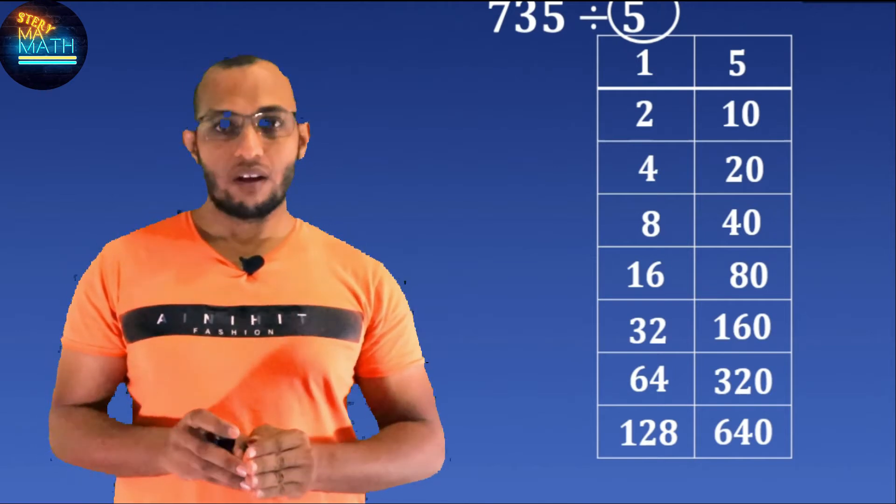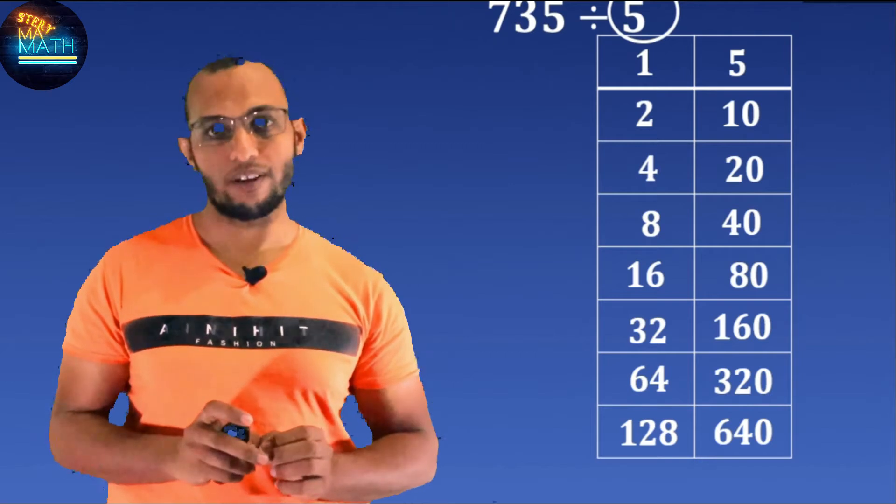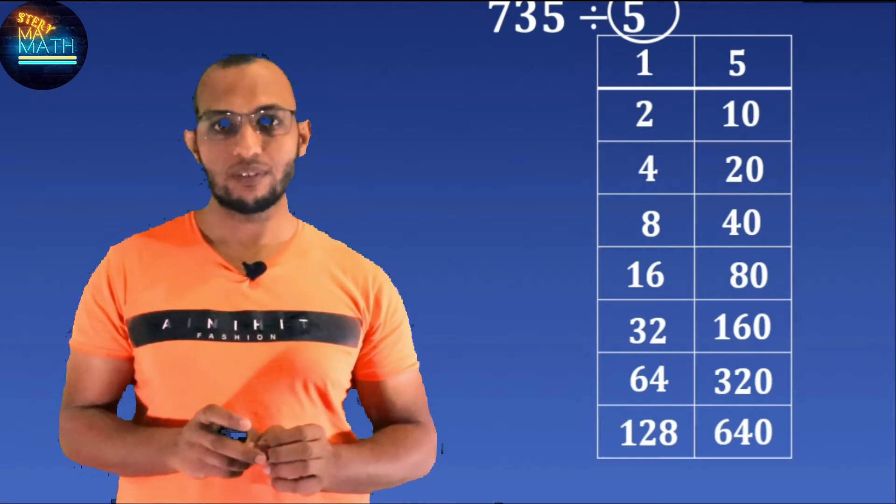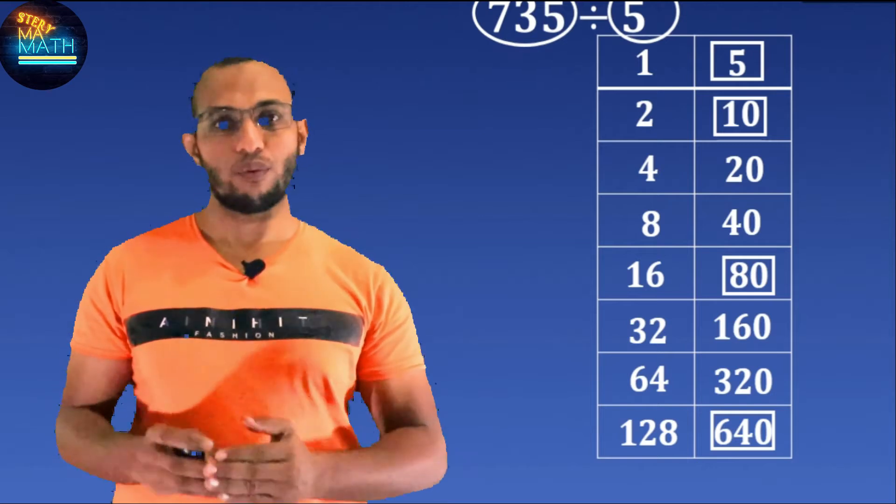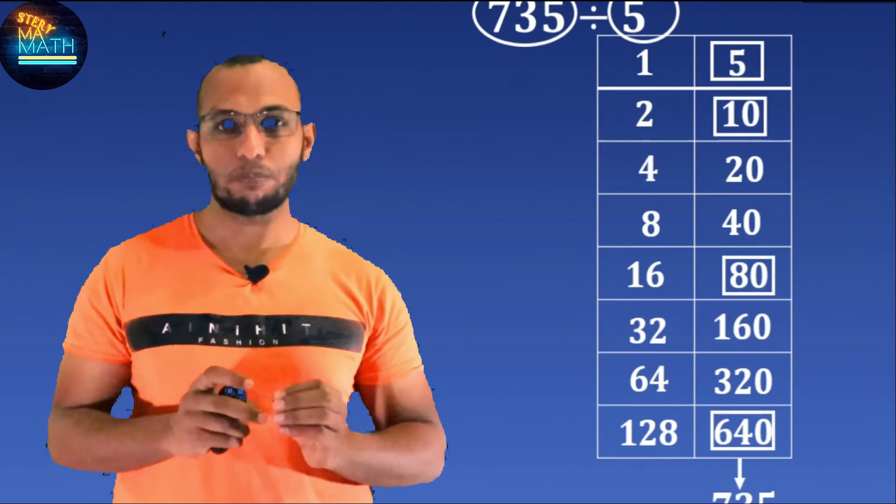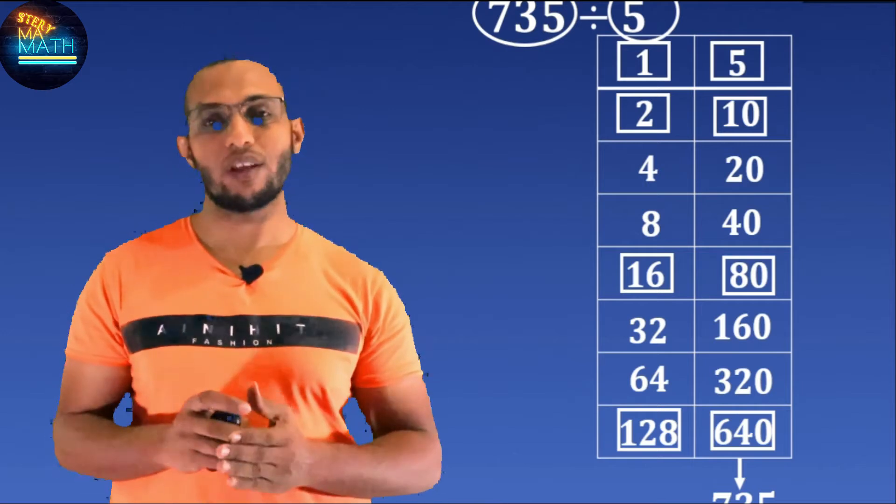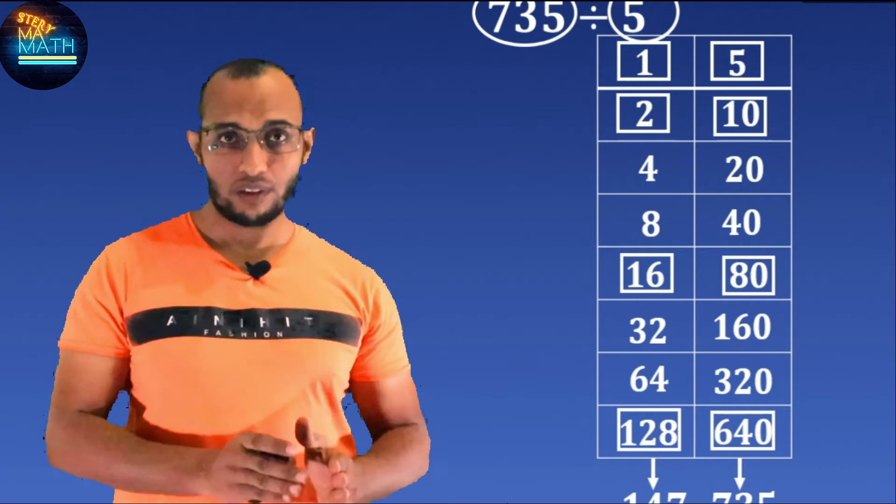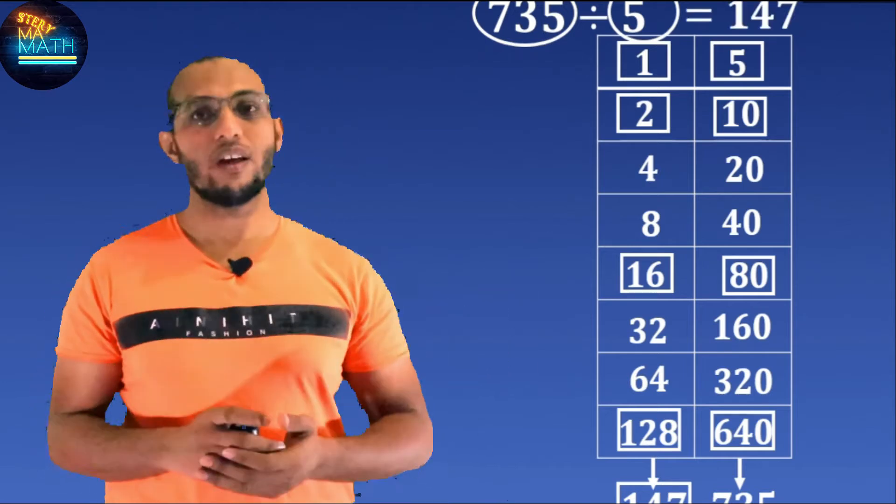Look at the right-hand column and see the numbers that add up to 735: 5, 10, 80, and 640. On the other hand, add the corresponding parts, which are 1, 2, 16, and 128, to get 147. So 735 divided by 5 is equal to 147.